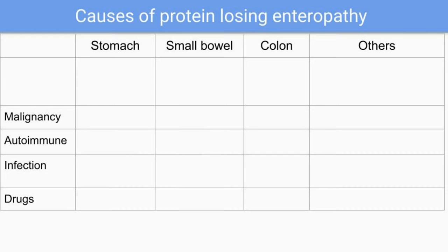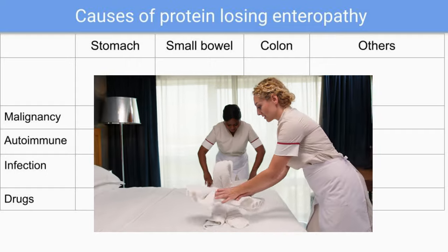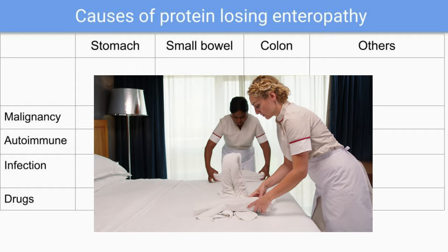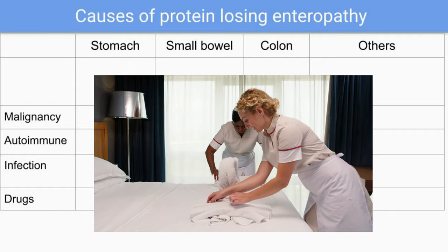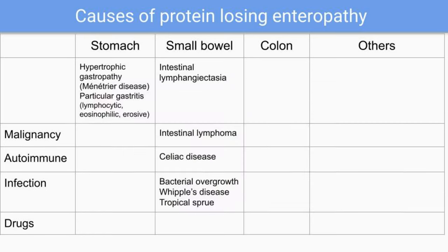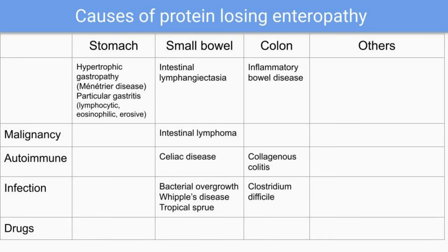I always share with students that if we have difficulty generating a differential diagnosis, think about MAID — Malignancy, Autoimmune, Infection, Drugs. For small bowel, apart from intestinal lymphangiectasia: malignancy includes intestinal lymphoma; autoimmune includes celiac disease; infection includes bacterial overgrowth, Whipple's disease, and tropical sprue.